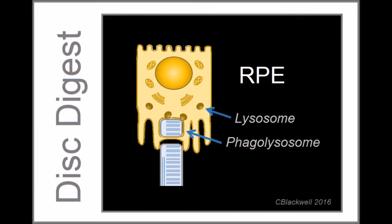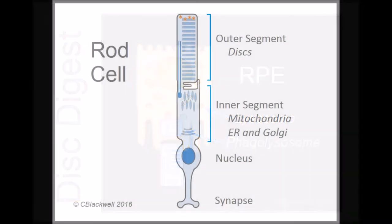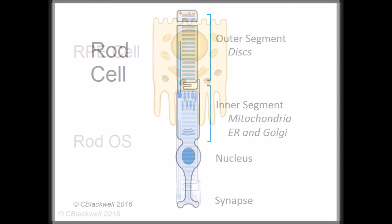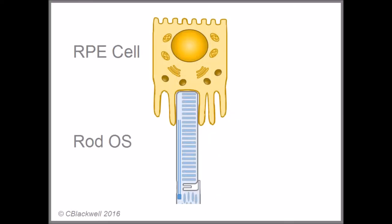Regarding the discs that reach the top of the stack, here they are shown as they are shed from the photoreceptor tip and digested by the RPE cell. Remember we showed the tip of the RPE cell with microvilli that surround the tips of the photoreceptor cells.